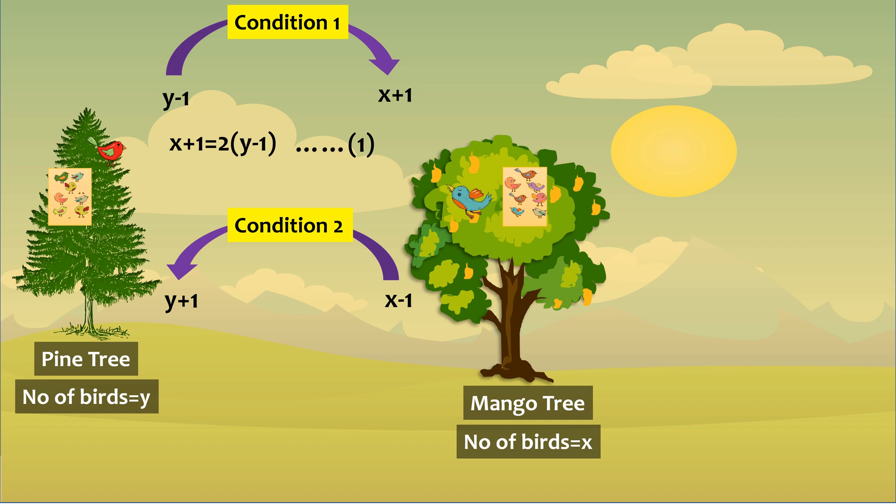Now, as per the bird on the pine tree, the number of birds on the pine tree after this transaction will be equal to the remaining number of birds on mango tree. This gives rise to the equation, y plus 1 equals to x minus 1. Let this be equation 2.